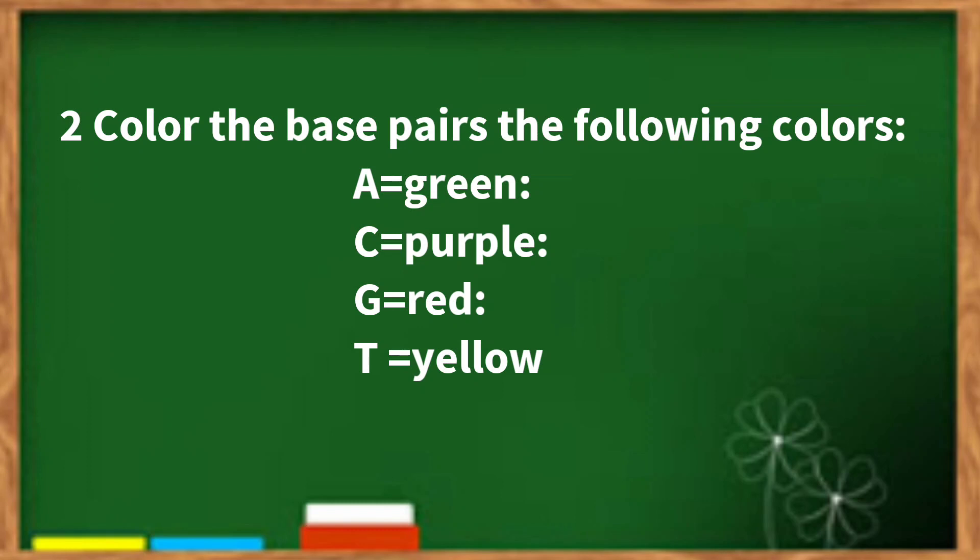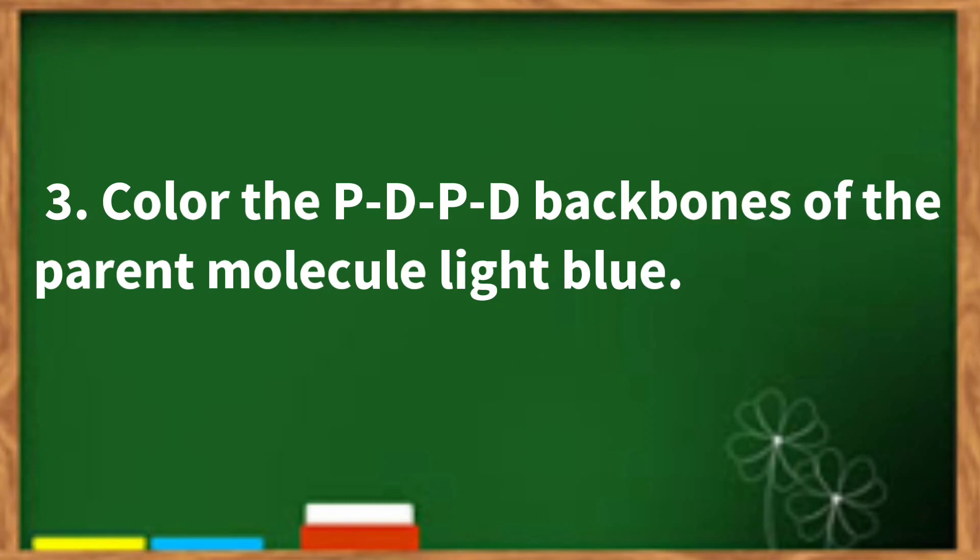A equals green, C equals purple, G equals red, and T equals yellow. 3. Color the phosphate-deoxyribose backbones of the parent molecule light blue.